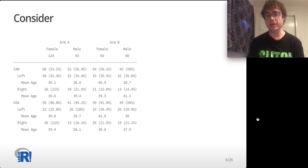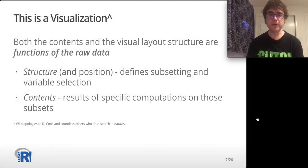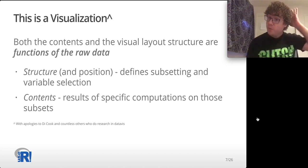First off I'm going to claim that this is a visualization because both the contents and the visual layout structure are functions of raw data, which is different than the data that is appearing in the table itself. The structure and position within the table is defined by subsetting and or variable selection, whereas the contents of each cell within the table are the results of specific computations on those subsets or selected variables.